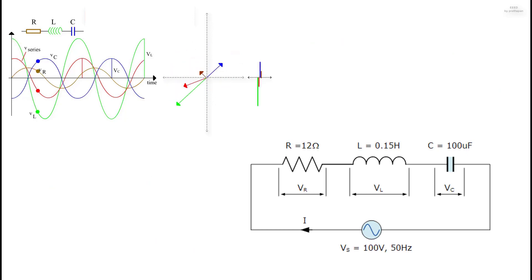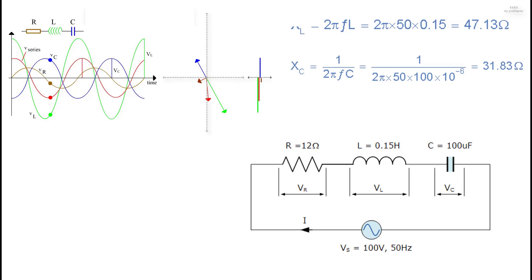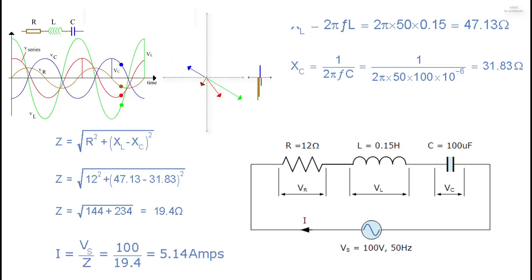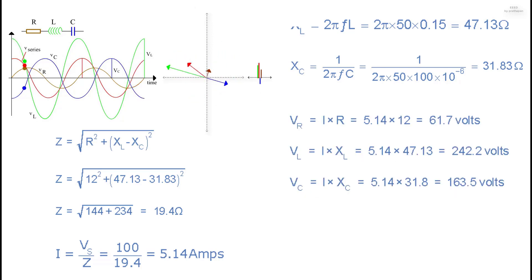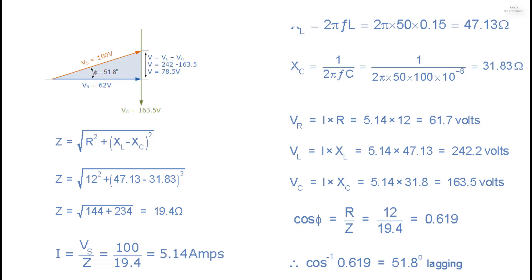In the series RLC circuit example, a resistance of 12 Ω, an inductance of 0.15 H and a capacitor of 100 μF are connected in series across a 100 V, 50 Hz supply. We calculate the inductive reactance XL, capacitive reactance XC, circuit impedance Z, circuit current I, voltages VR, VL and VC, and the power factor and phase angle theta. Since the phase angle theta is calculated as a positive value of 51.80°, the overall reactance is inductive, and the current lags the source voltage by 51.80°, confirming the mnemonic expression ELI.